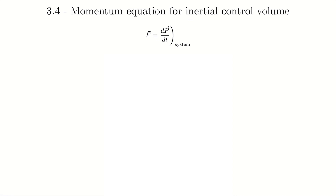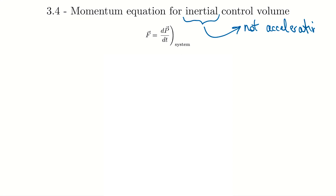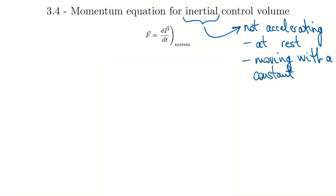This section is titled Momentum Equation for Inertial Control Volume. Newton's second law states that the balance of forces equals the time rate of change of linear momentum — that's why we have the momentum equation, since momentum and forces are interchangeable. Inertial means not accelerating. We'll look first at control volumes at rest, then at control volumes moving with a constant velocity, since those are also not accelerating.